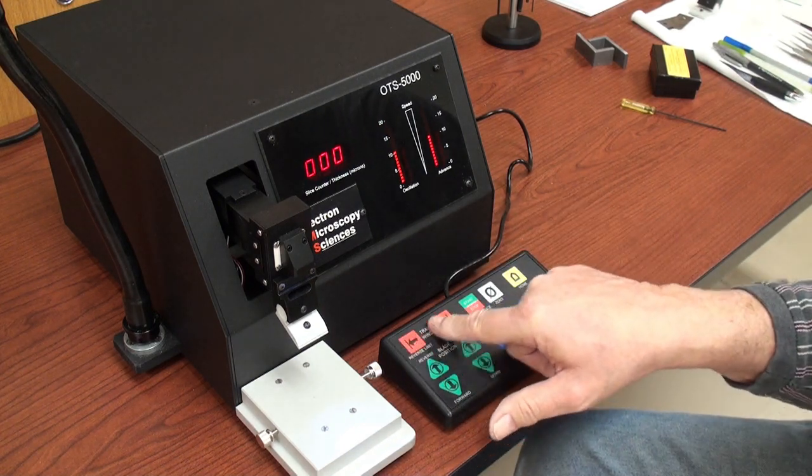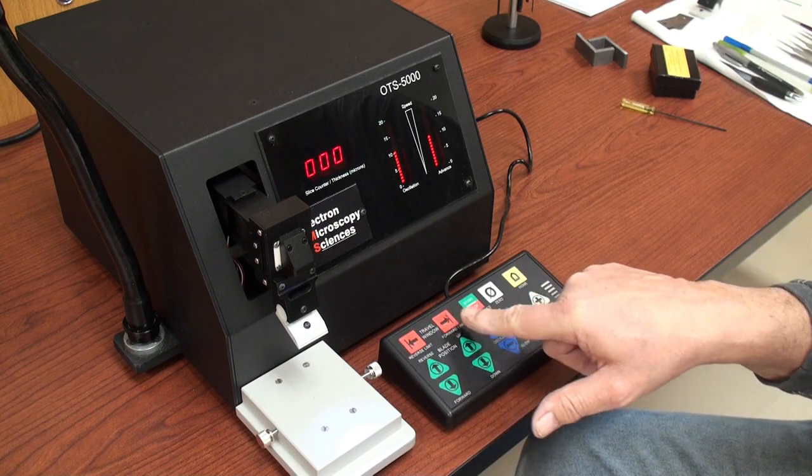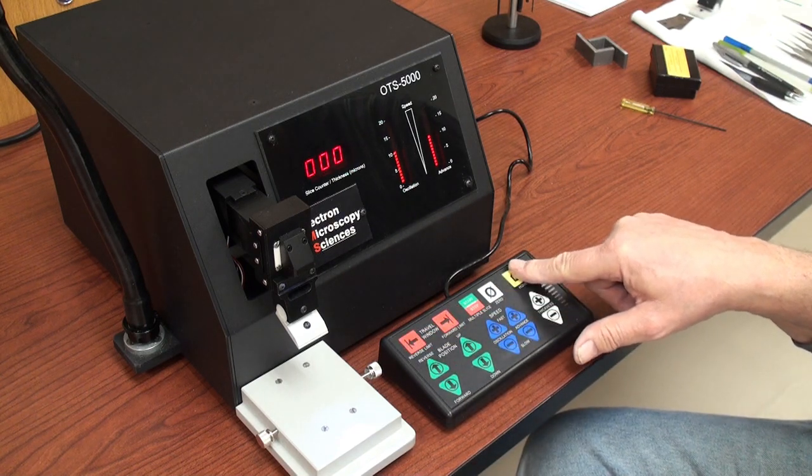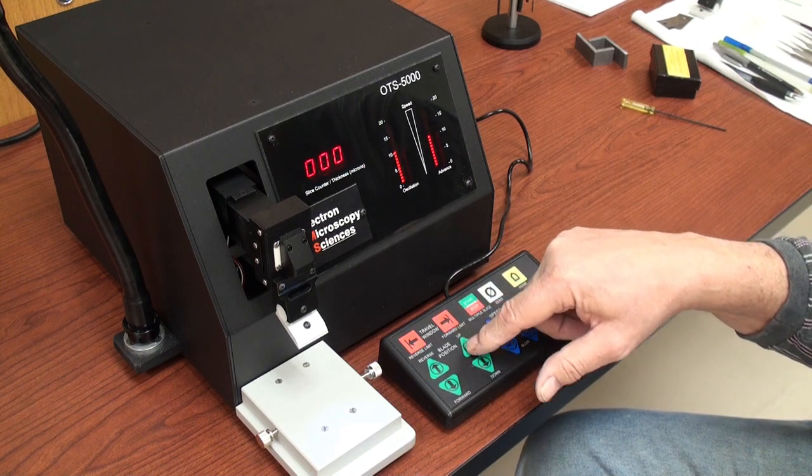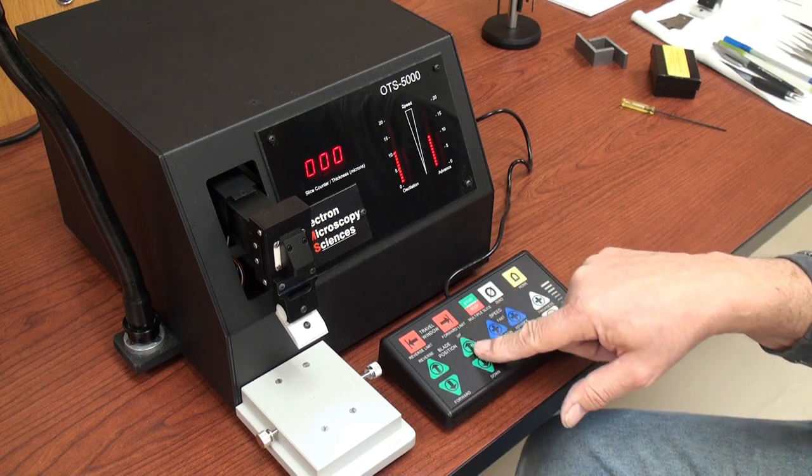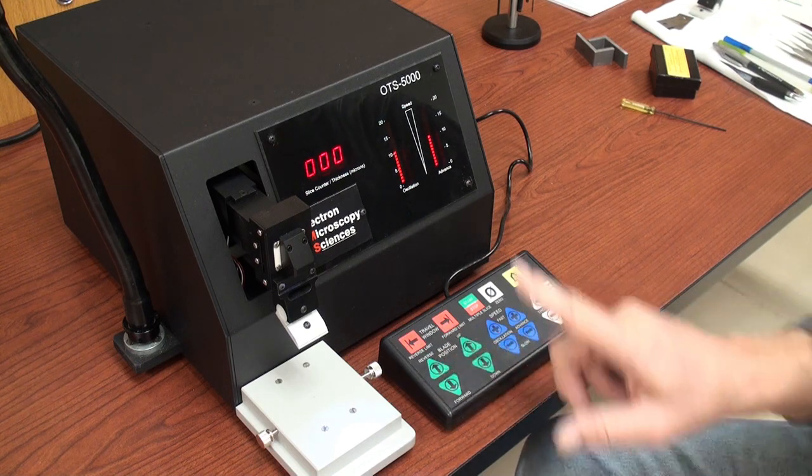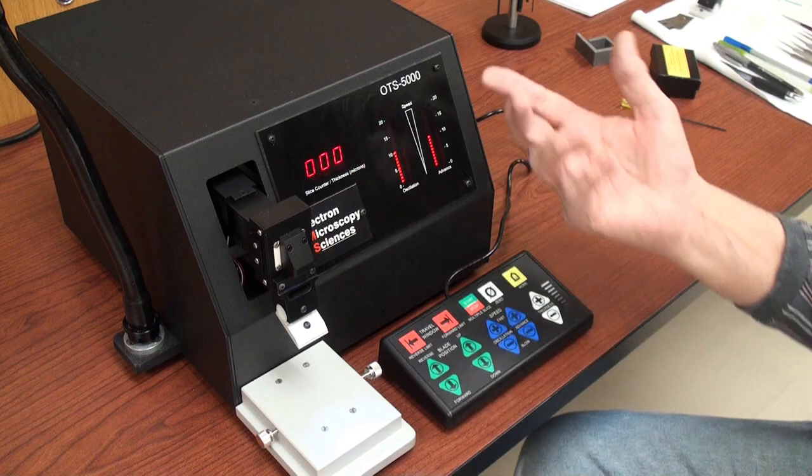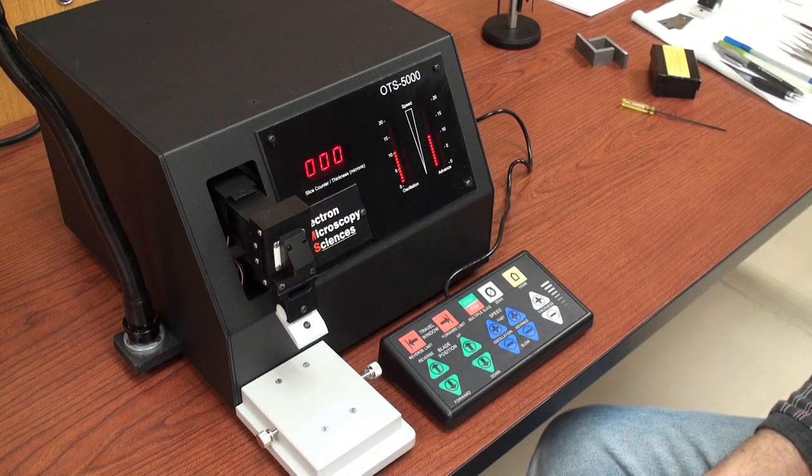The 4500 model does not allow you to set cutting windows. Nor does the home button work. So you would have to manually advance or retract the blade position. Raise it up. Raise it all the way to reverse when you're done sectioning for that amount of time.